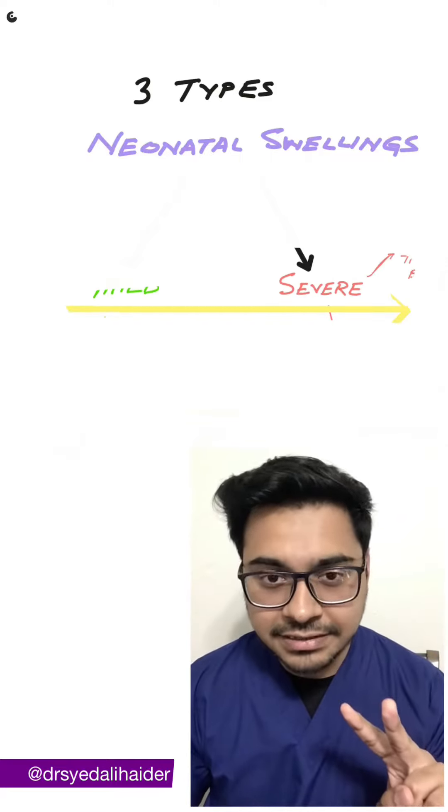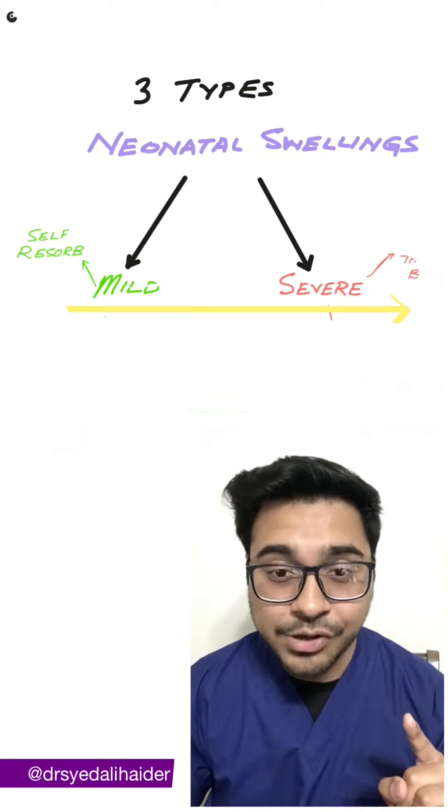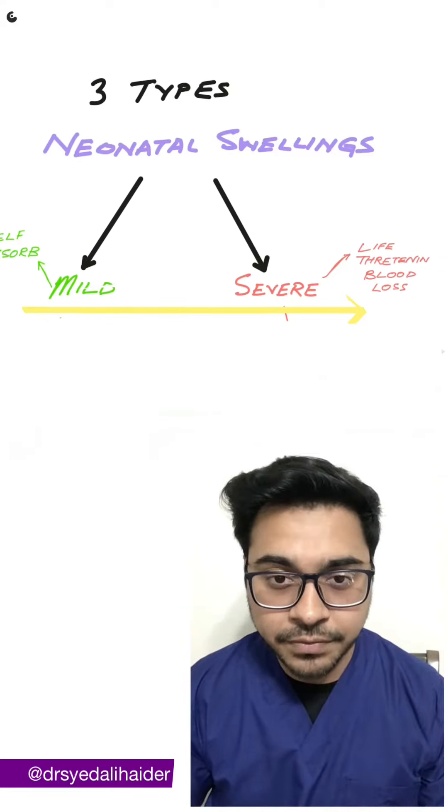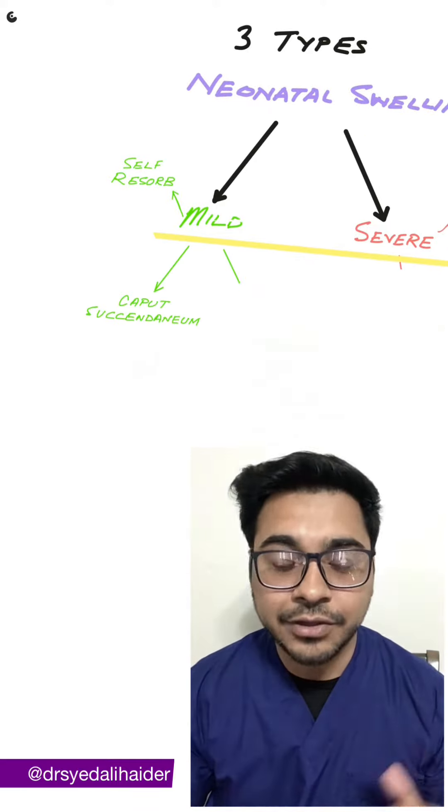So two are mild such that they self-resorb with time. One is severe and may cause life-threatening blood loss. The two mild ones are caput succedaneum and cephalohematoma.